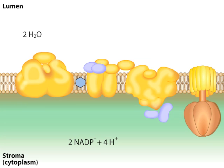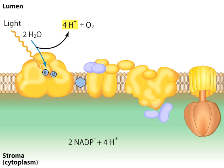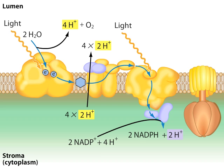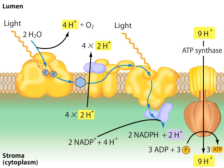Oxygenic photosynthesis is a pathway in which the energy from light separates pairs of electrons from water, generating molecular oxygen. The electrons flow through an electron transport chain and ultimately combine with NADP+ to produce NADPH. During this process, the energy from electron flow is used to pump protons across the membrane. The proton potential then provides the energy to synthesize ATP using ATP synthase.